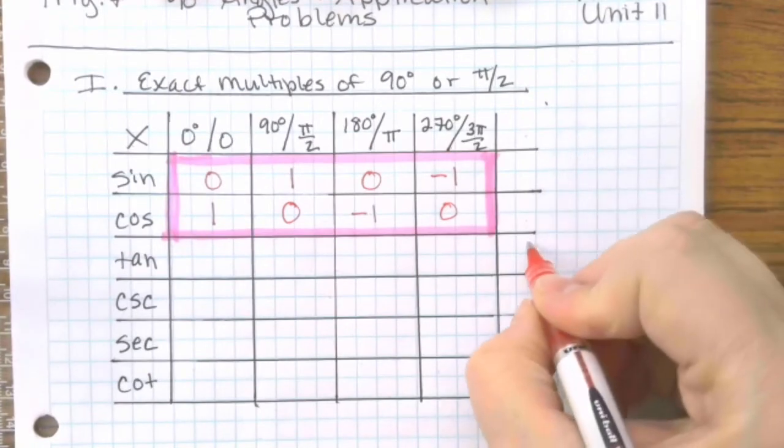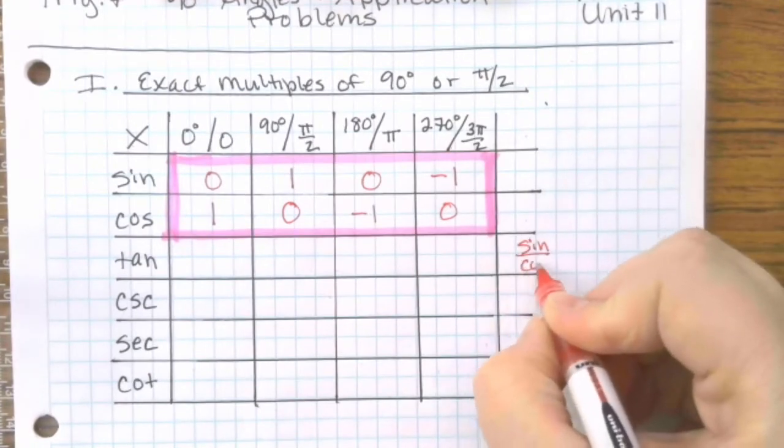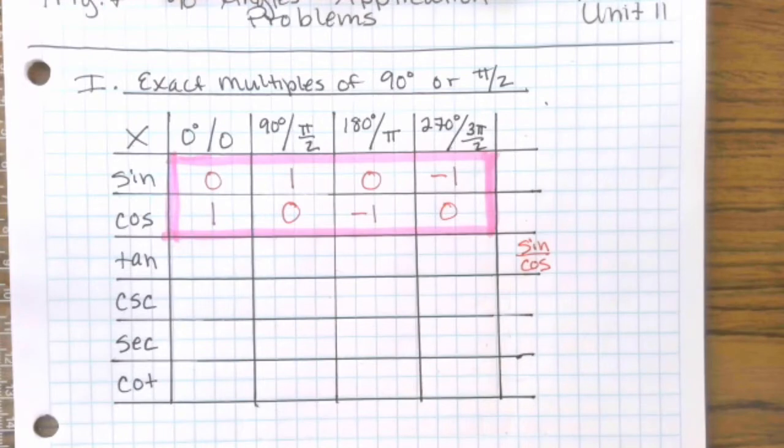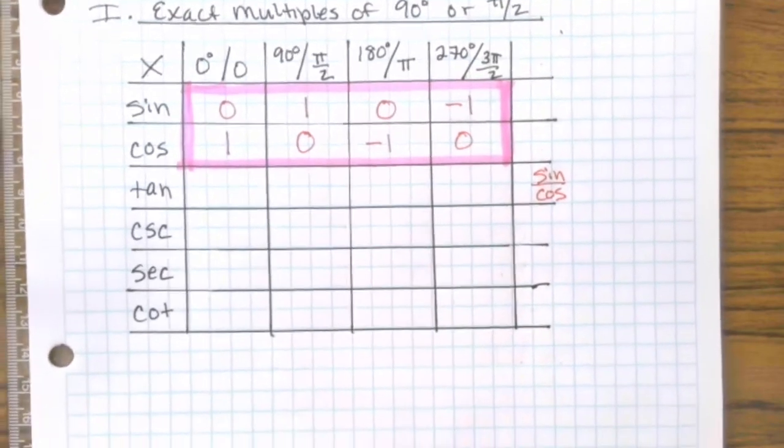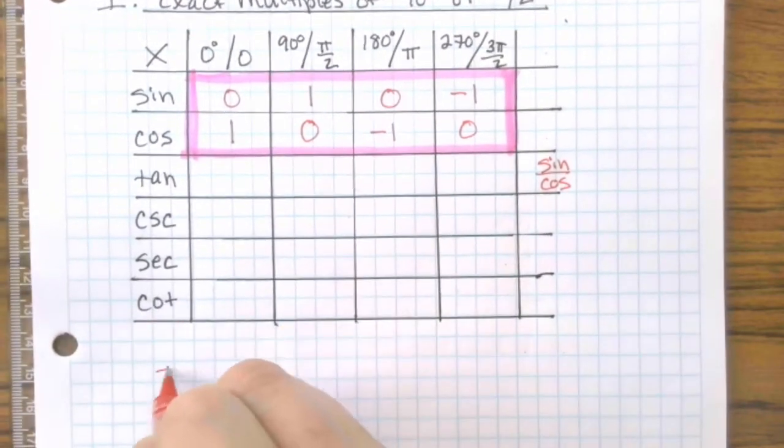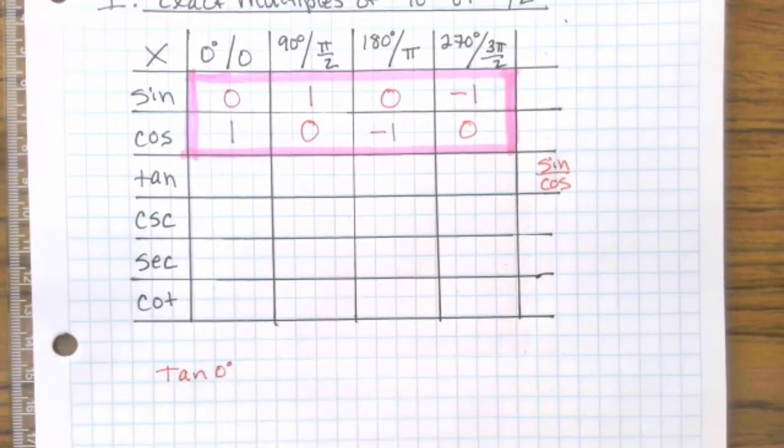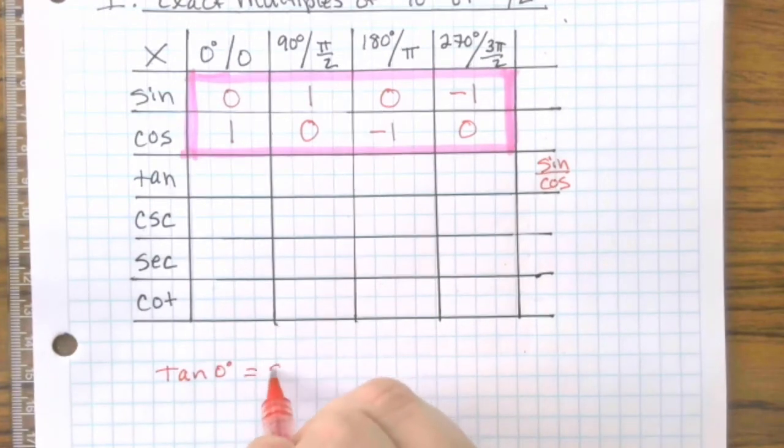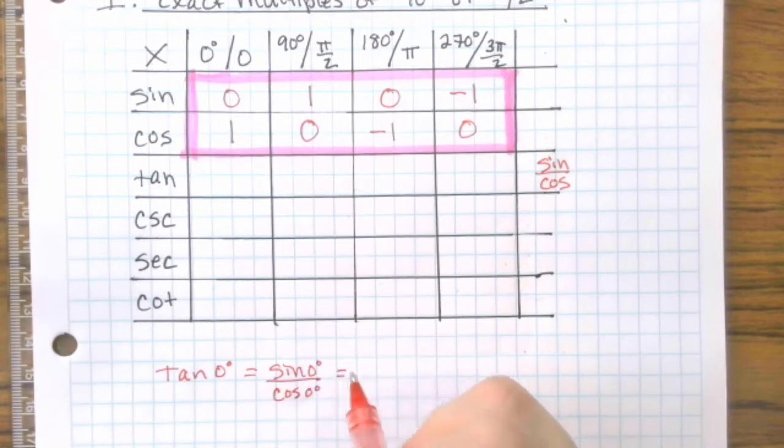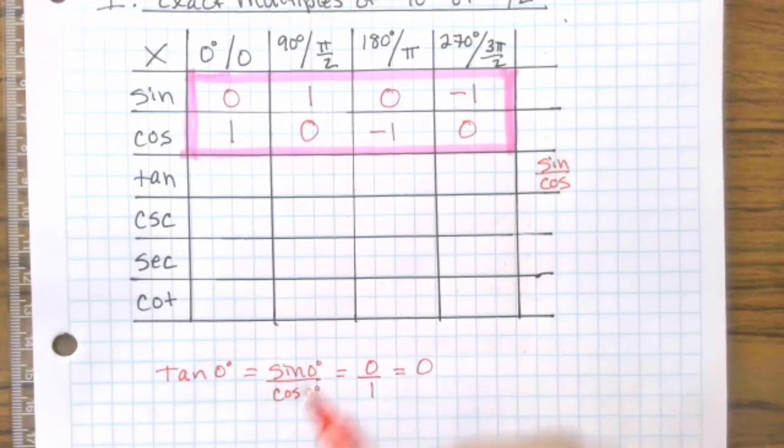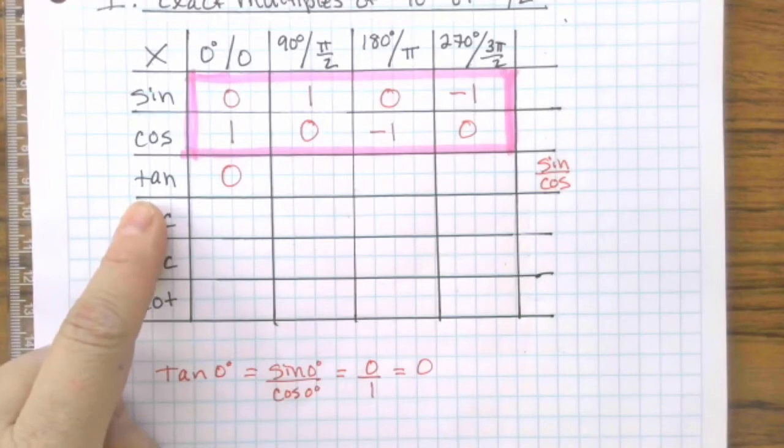Remember that tangent is equal to sine over cosine. So if you're trying to find tangent of 0 degrees, you're going to just take sine of 0 over cosine of 0. Sine of 0 is 0, cosine of 0 is 1, and you get a 0.